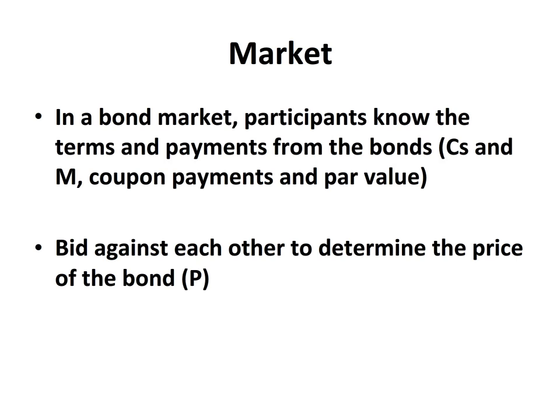There is a market for bonds, and in that bond market, participants know the terms and the payments on the bonds. They know the coupon payments and the par value, or the value at the end of the payment, and they bid against each other to determine the price of the bond, which is P in this case. The market determines P, we know C and M's, and then using a yield-to-maturity formula, we can calculate the yields.